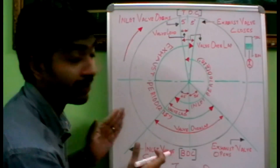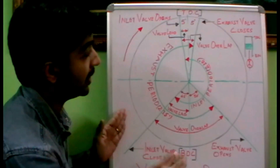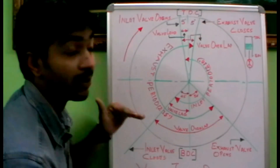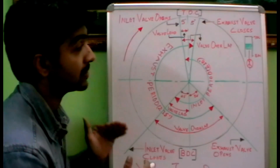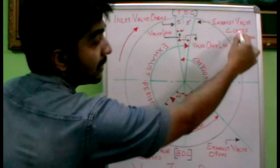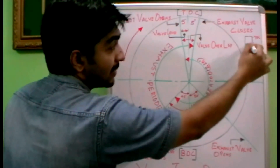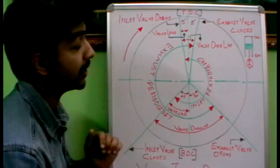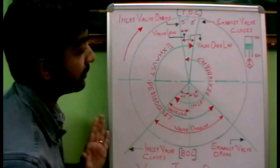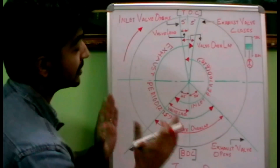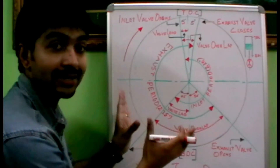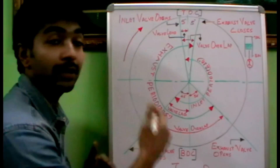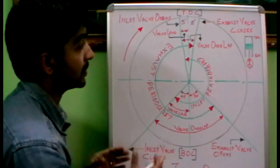This is a valve timing diagram drawn here. It shows the rotation of the crankshaft and when and where the inlet and exhaust valves close and open. Here we have drawn the cylinder and the piston, with top dead center and bottom dead center marked. This is the practical concept of how and when the inlet and exhaust valves close and open.